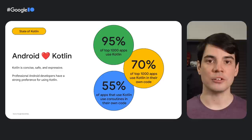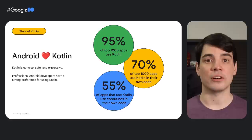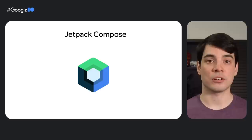This includes indirect use through dependencies. Looking only at applications' own code, over 70% of the top 1000 apps have Kotlin in their codebase. Coroutines, our recommended solution for asynchronous programming on Android, are used in the codebase of 55% of apps that use Kotlin.